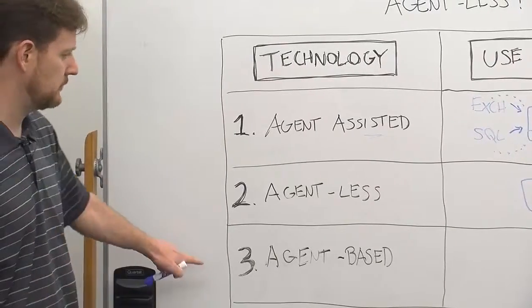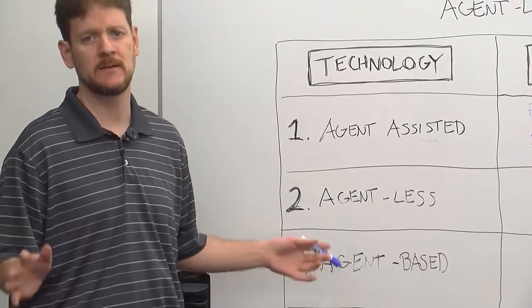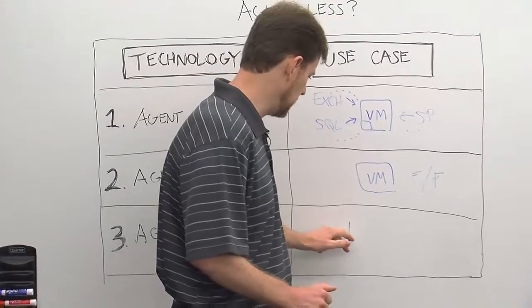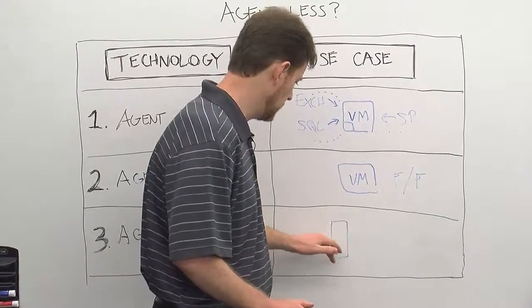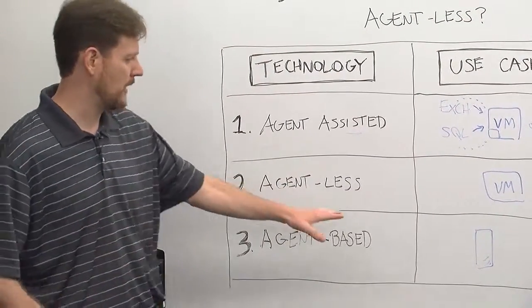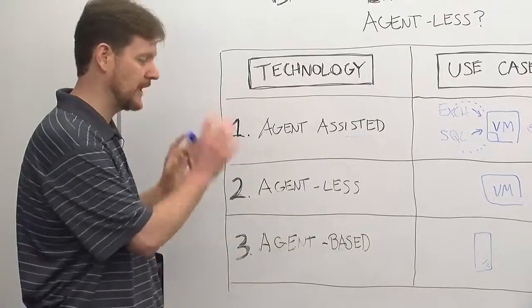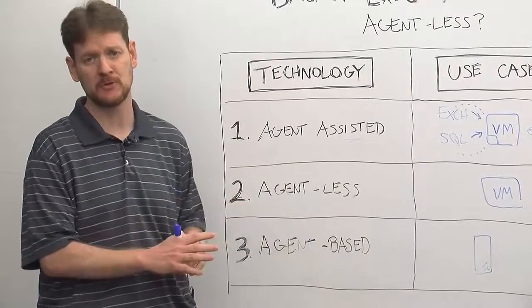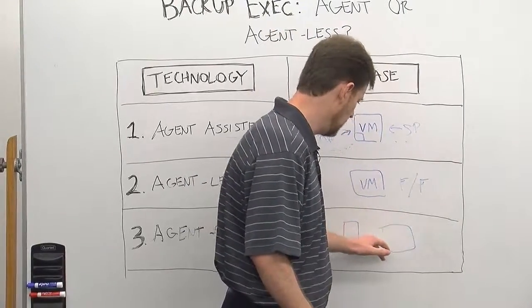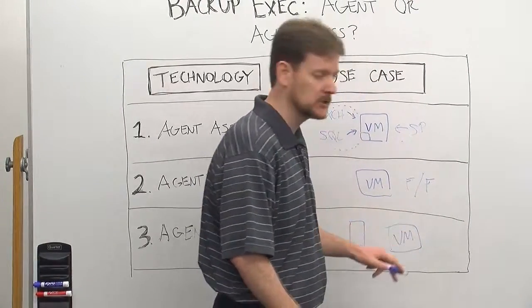Finally, you have agent-based. This is your classic physical standalone legacy machine. So it's your standalone hardware server. You deploy the agent for Windows to that box or agent for Linux, and then you do standard legacy backups of that virtual machine. You can also use this for virtual machines that have unique configurations.